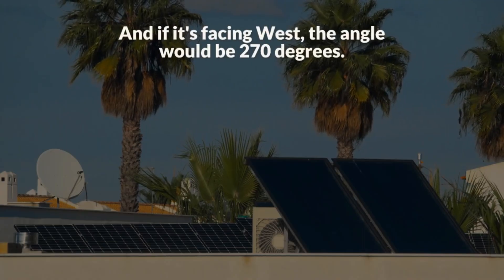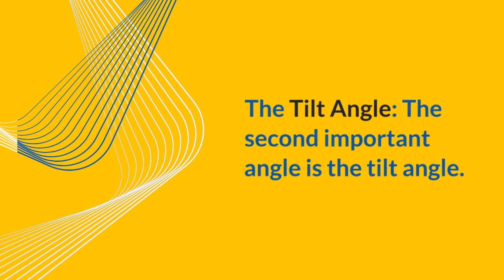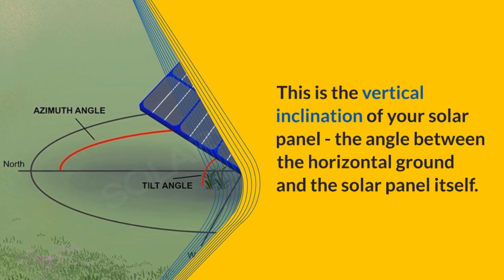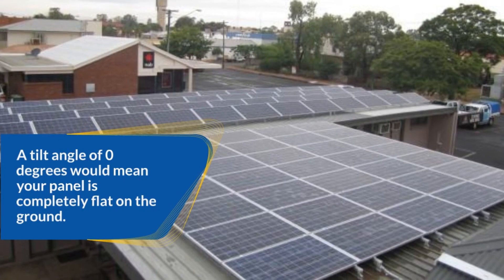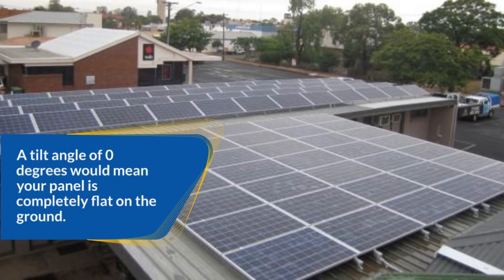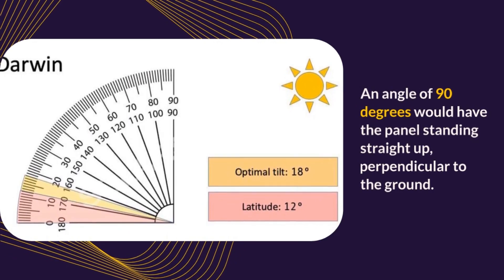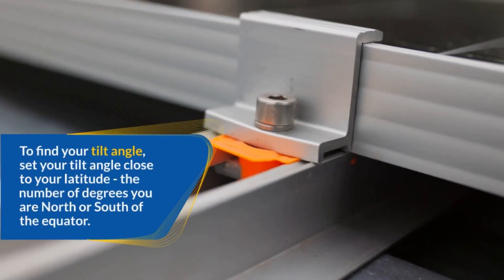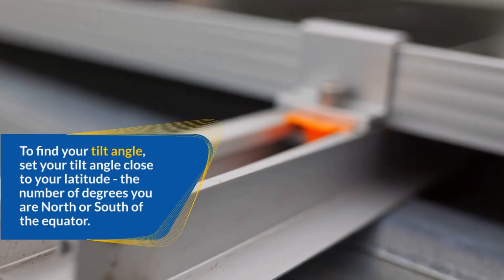And if it's facing west, the angle would be 270 degrees. The Tilt Angle. The second important angle is the tilt angle. This is the vertical inclination of your solar panel — the angle between the horizontal ground and the solar panel itself. A tilt angle of 0 degrees would mean your panel is completely flat on the ground. An angle of 90 degrees would have the panel standing straight up, perpendicular to the ground. Most experts recommend setting your tilt angle close to your latitude — the number of degrees you are north or south of the equator.